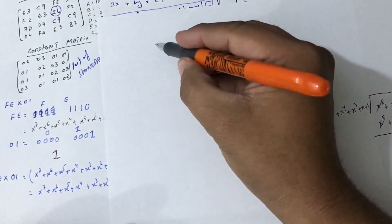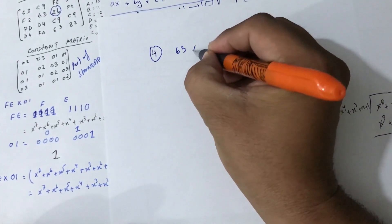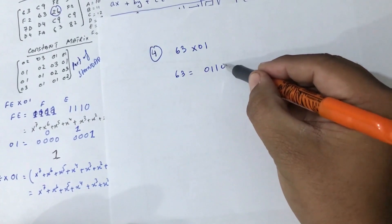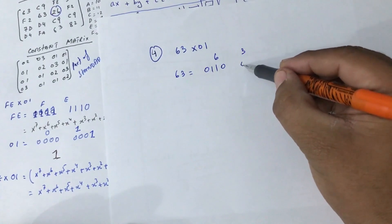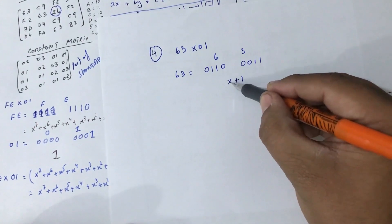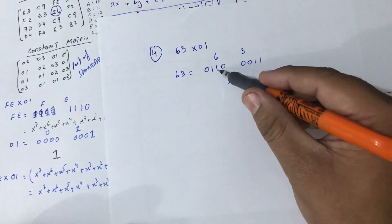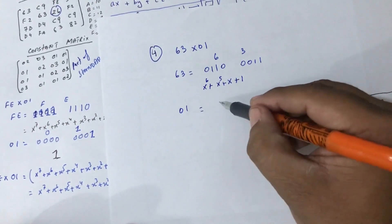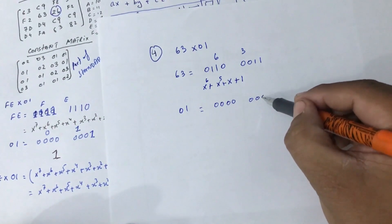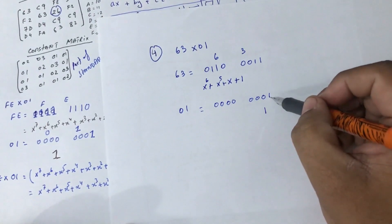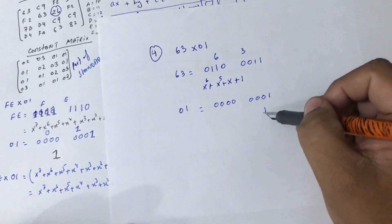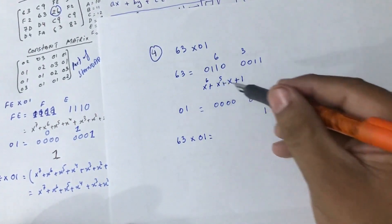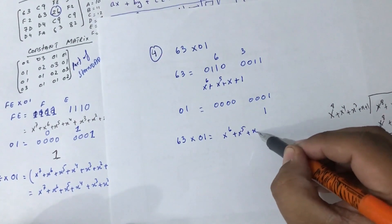The fourth one: 63 multiplied by 01. What is 63? 63 is 0110 0011 — that's 6 as 0110 and 3 as 0011. In polynomial form this is x to the 6 plus x to the 5 plus x plus 1. And 01 is just 00000001, which is 1. So multiplying by 1 gives back the same thing: 63 × 01 = x to the 6 plus x to the 5 plus x plus 1.